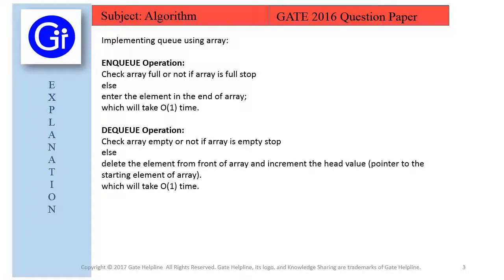And for dequeue operation, check array whether empty or not. If array is empty then we stop, else delete the element from the front of the array and increment the head value. Pointer to the starting element of the array is called head. And this will take big O of 1 time only, because we are implementing it with the help of an array, and as we discussed earlier, array is a static data structure.